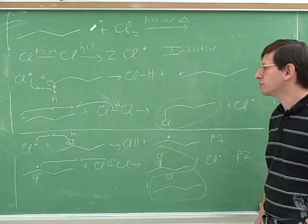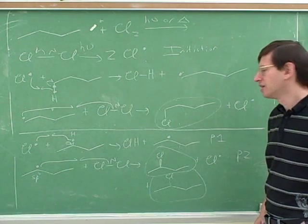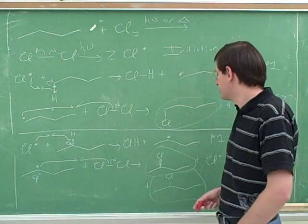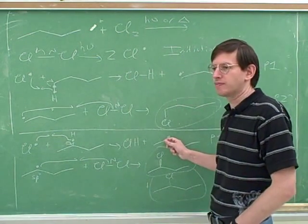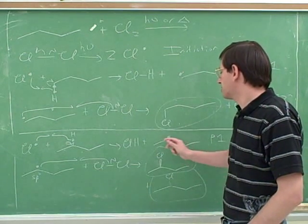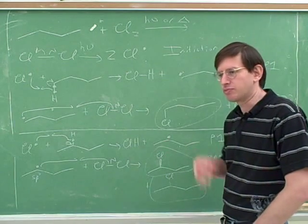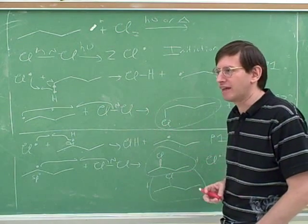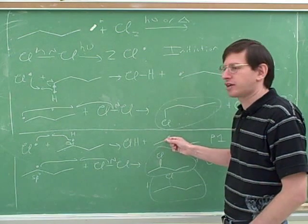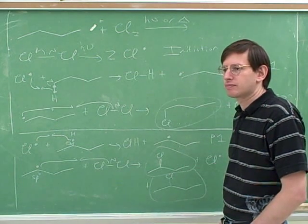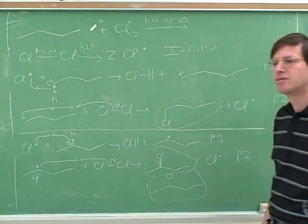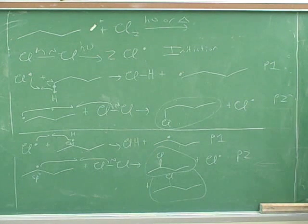Based on radical stability, the instructor asks which hydrogen chlorine would prefer to take. The student answers: the secondary one. The instructor confirms: chlorine would prefer to take the internal hydrogen because it forms the more substituted radical. The student seems to already know that substitution with carbon chains stabilizes radicals. The instructor then asks: is a radical electron poor or electron rich? The student is unsure.